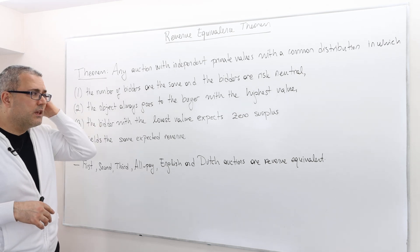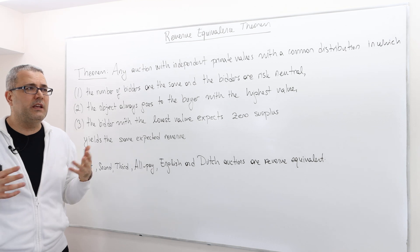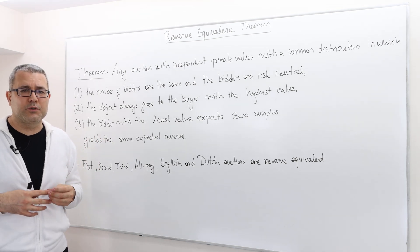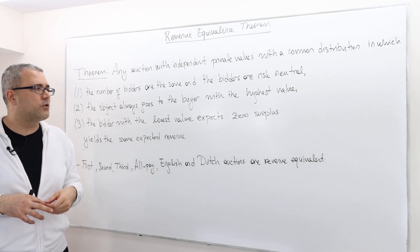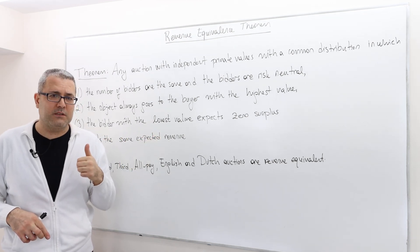And again, the bidder with the lowest value expects zero surplus. You may say, well, if you have the lowest value you're going to lose for sure, then why should you get a positive surplus? Well, here you may not get positive surplus, but you may get negative surplus.